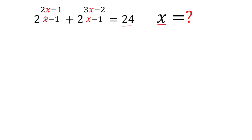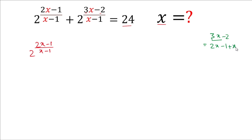For solving this problem, if you look at the numerators, there is 2x-1 here and 3x-2 there. We will convert 3x-2 into the form of 2x-1. We can write 3x-2 as (2x-1) + x - 1, which simplifies to 2x-2, or in the form (2x-1) + (x-1). So we write 2^((2x-1 + x-1)/(x-1)).